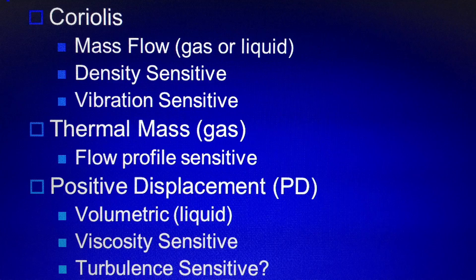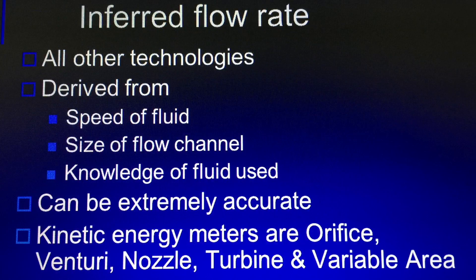Three technologies can measure primary direct mass or volumetric flow. Coriolis meters and thermal mass meters can measure mass flow directly. Positive displacement devices, such as geared meters and gear pumps, make primary volumetric flow rate measurements. All other flow measurement technologies measure flow rate by an inferred method. The flow rate calculated is derived from the speed of the fluid, size of the flow channel, and knowledge of the fluid used.